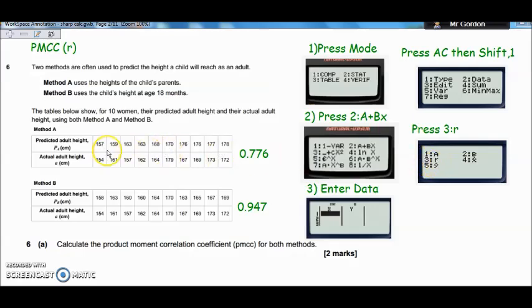This time we want the R value. So on my calculator, it's option 3. And if you've entered that data correctly, you should get a value for method A of 0.776. I've rounded that up to three decimal places. So pause the video, enter the data, and see if you get an R value that matches mine. And then repeat that process for method B, and see if you get a similar answer as well.